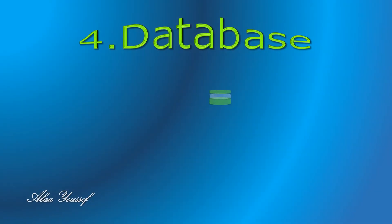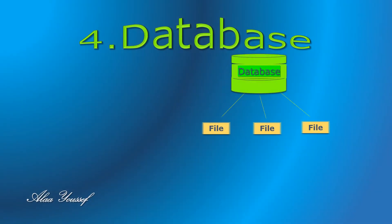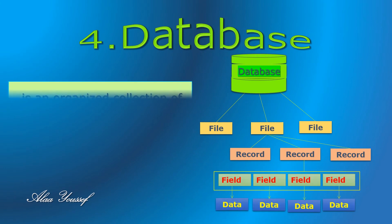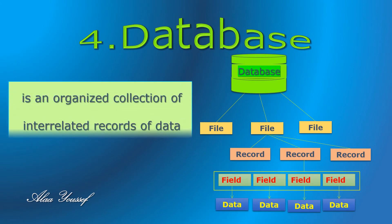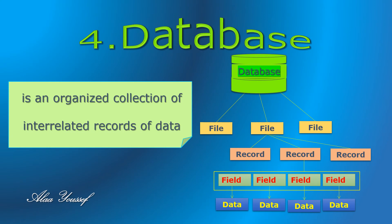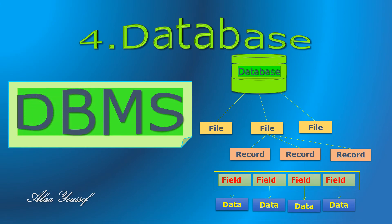Database. A database is the collection of interrelated records of data organized by the computer. The data is organized such that individual records or groups of records can be retrieved according to specific criteria. A database is usually controlled by a database management system (DBMS), through which data can be easily accessed, managed, modified, updated, controlled, and organized.